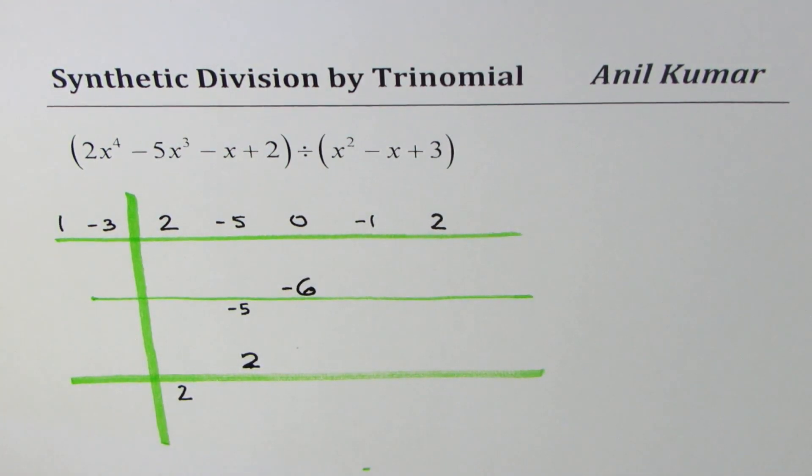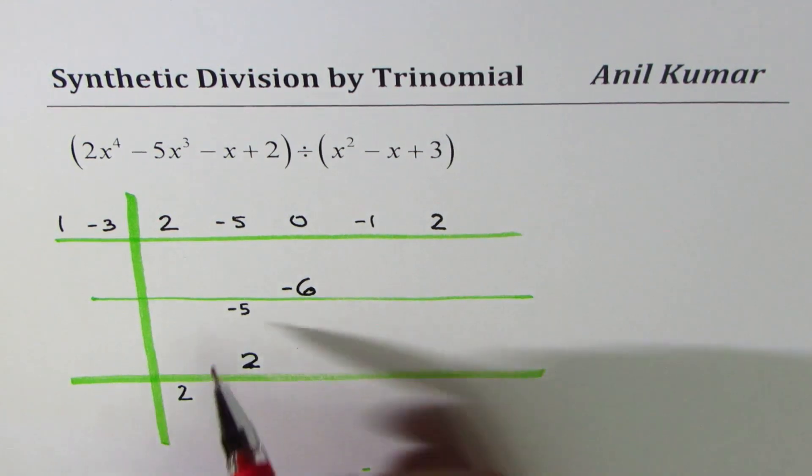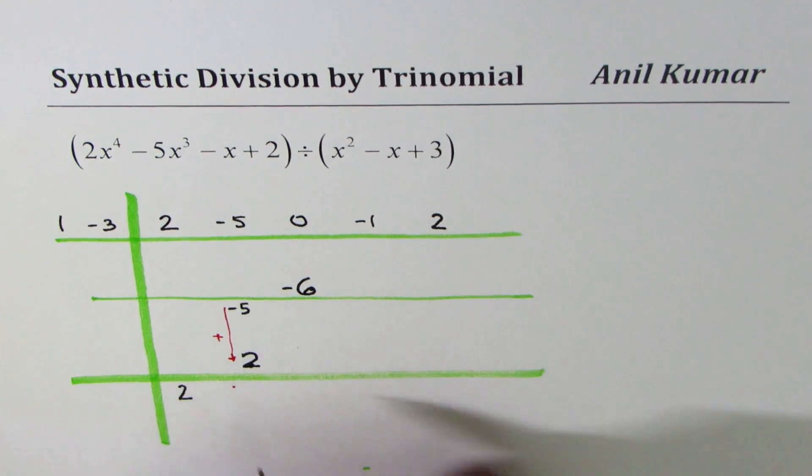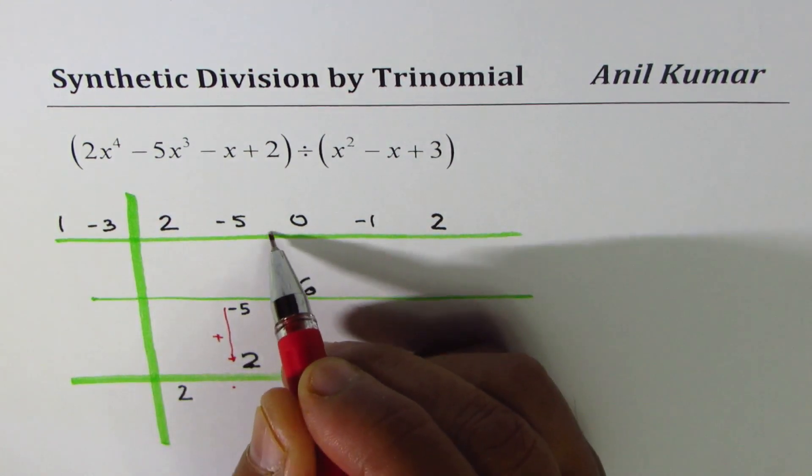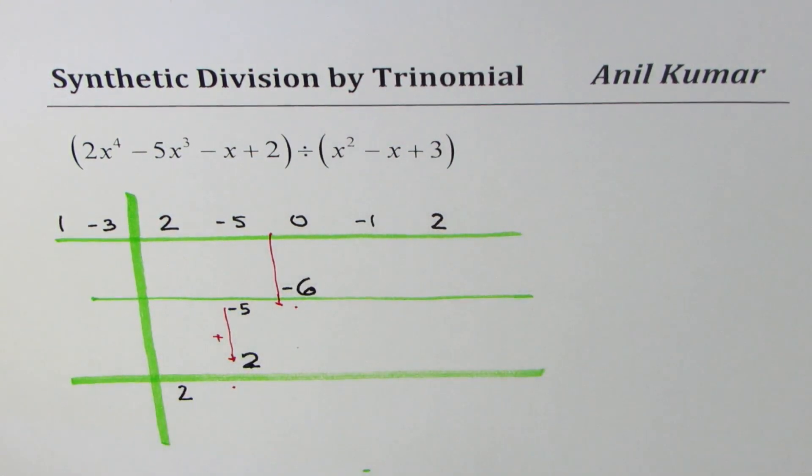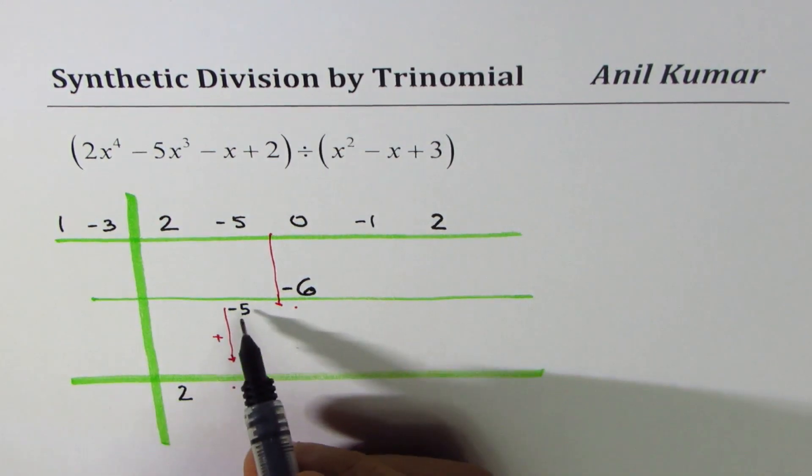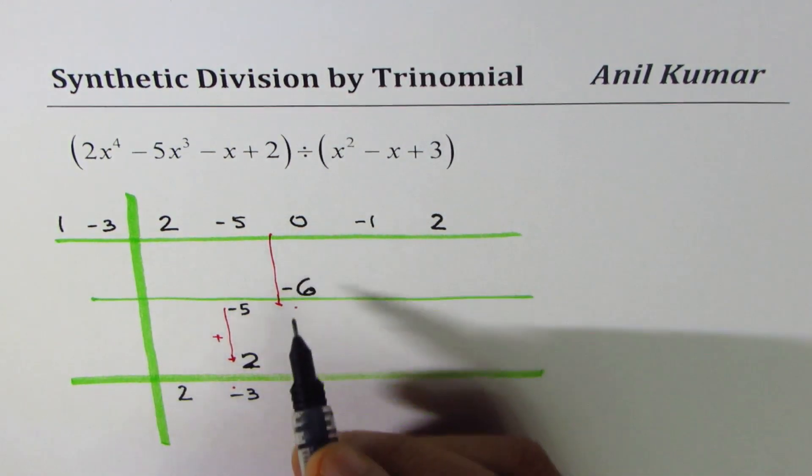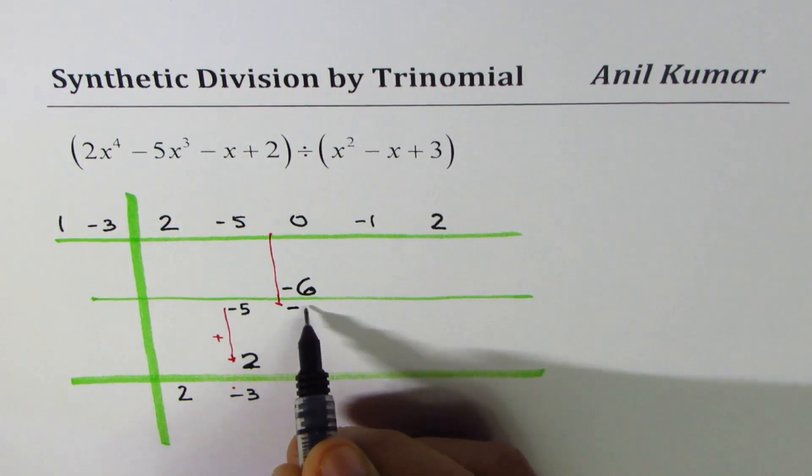Now, next step is to add. We'll add these two terms, bring them to this end, and these two terms, write it under the line. When you add minus 5 and 2, you get minus 3. When you add 0 and minus 6, you get minus 6.